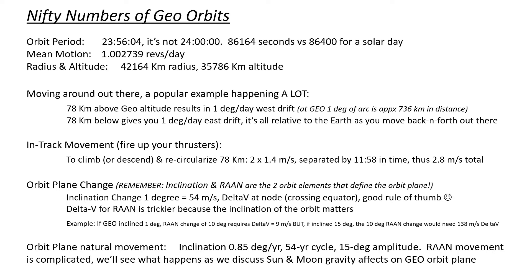The delta-V for doing a RAAN change — changing the twist — is a little trickier because it requires you to know what the inclination of the orbit is, and it matters. For example, if we're inclined at one degree and you want to rotate the RAAN 10 degrees, that's going to cost you 9 meters per second of delta-V — not so bad. But if we were at 15 degrees inclined and you wanted that same 10-degree RAAN change, it's 138 meters per second delta-V. So really pay attention to what the inclination is.